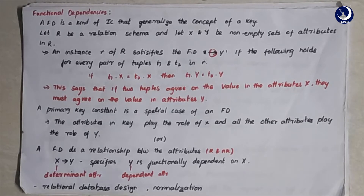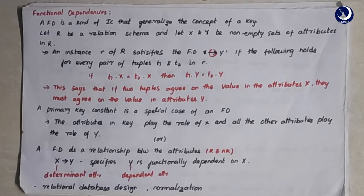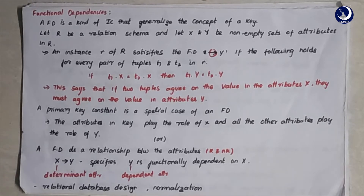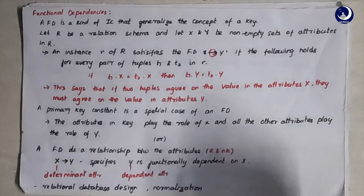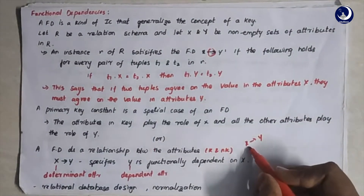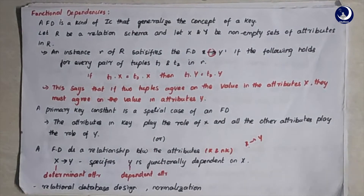A functional dependency is basically a relationship between attributes. X is a set of minimal attributes and Y is a set of other attributes — specifically, it's a relationship between key attributes and non-key attributes. When we say X defines Y, X is the determinant and Y is the dependent. Y depends on X for retrieving its value — meaning Y is existentially dependent on X.